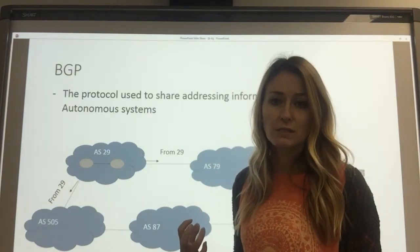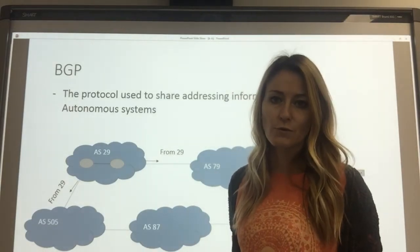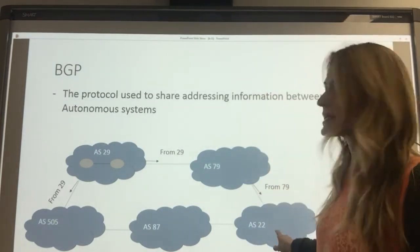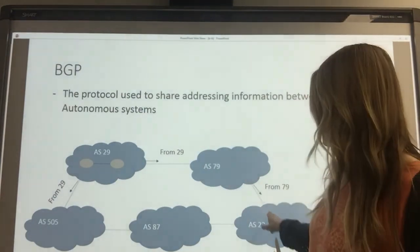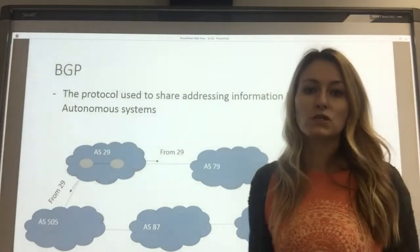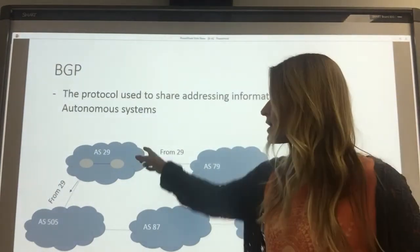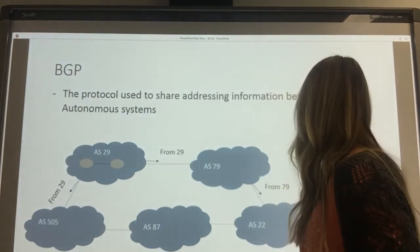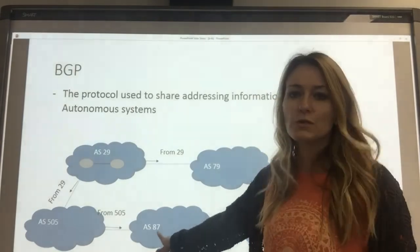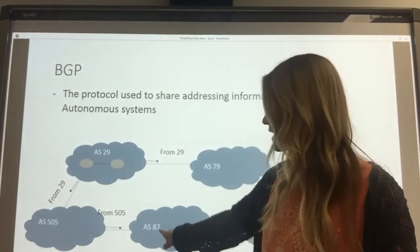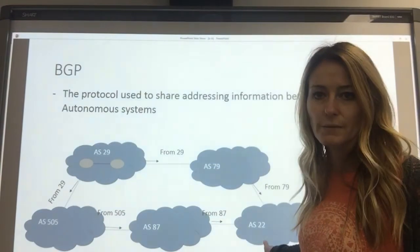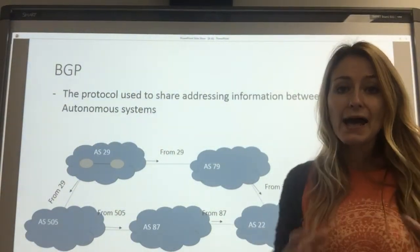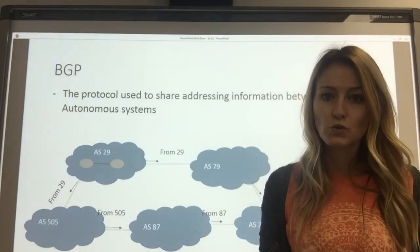So then those autonomous systems are going to advertise that information and push it out as well. So 79 communicates with 22 — it tells 22 the block of addresses that autonomous system 29 is allocated to use. 505 does the same; it pushes it on to this autonomous system, and that autonomous system pushes it further. So now autonomous system 22 has this information from two sources.